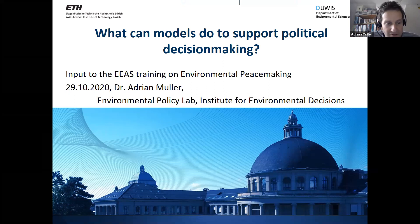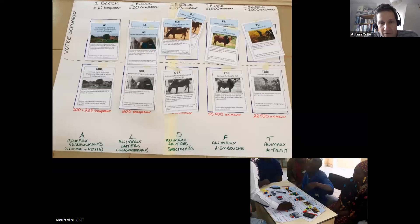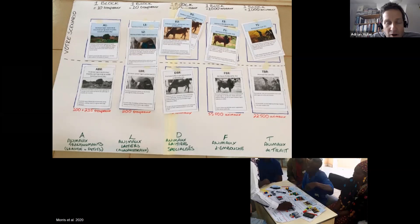Jan Bogaert talks about what models can do to support political decision-making. As a theoretical physicist, he wants to start with a picture for modeling. In this 15 minutes he wants a short input and then discussion on modeling. He sees modeling very much as a boundary object, which helps to bring people together to discuss complex issues and gives tools to discuss about it in a well-structured way.